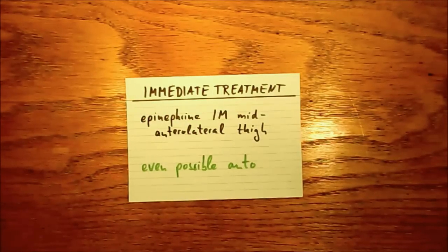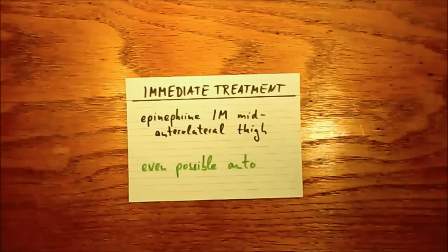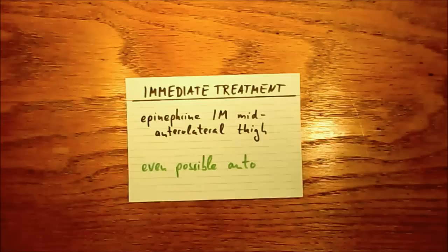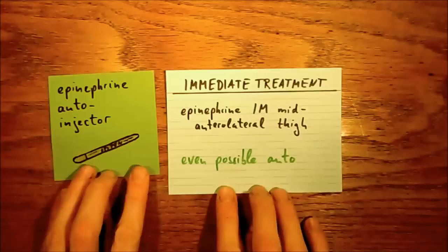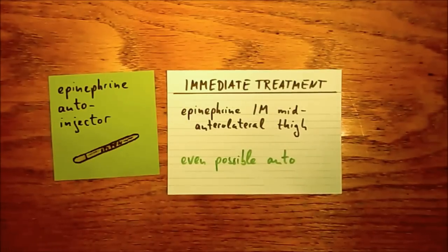If exposure cannot be avoided, epinephrine becomes the frontline treatment. It's usually applied intramuscularly into the mid-anterolateral thigh, and that's because that's the quickest way of getting it into the system and one of the easiest. It can even be applied by yourself, so a lot of patients will have epinephrine autoinjectors which they can use to inject epinephrine into their thigh once they have exposed themselves accidentally to a trigger.